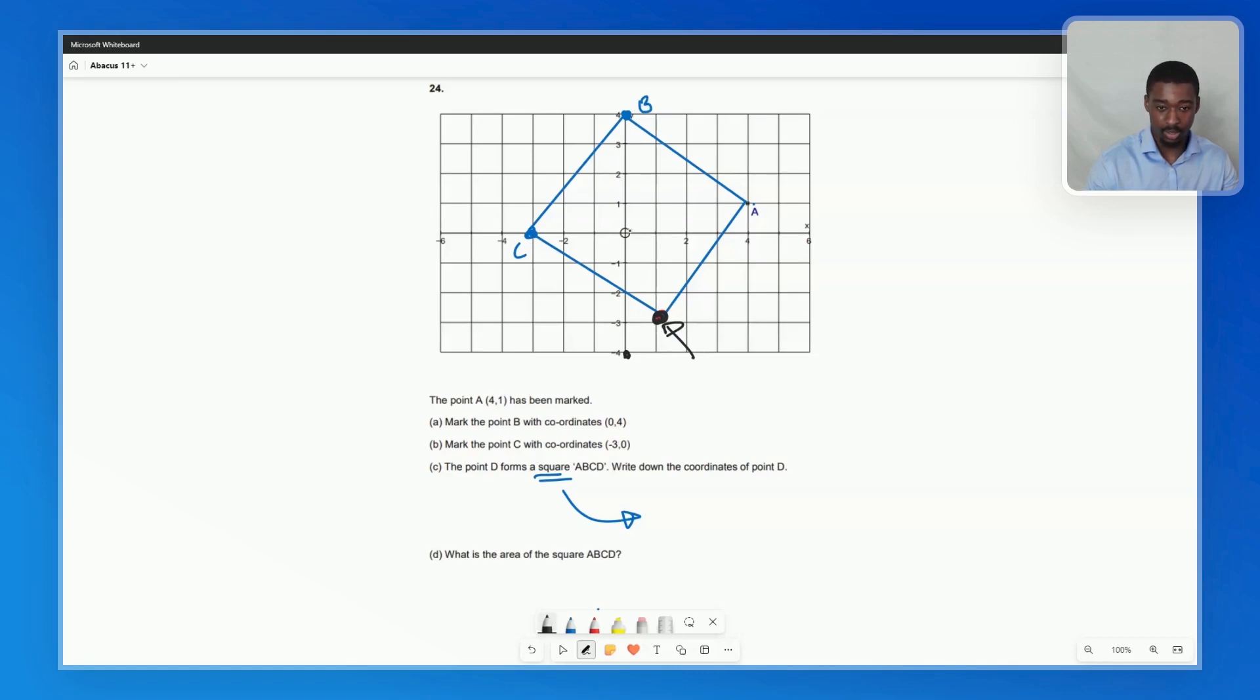And here we're looking at 1, minus 3. 1 to the right, 3 down. So the coordinates of point D are going to be 1, minus 3.